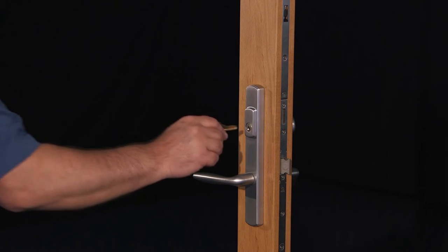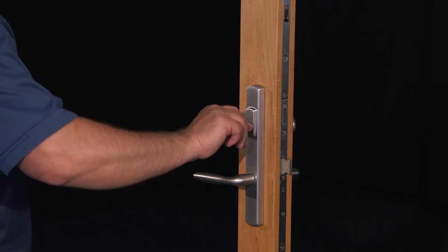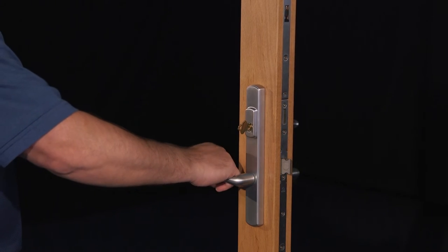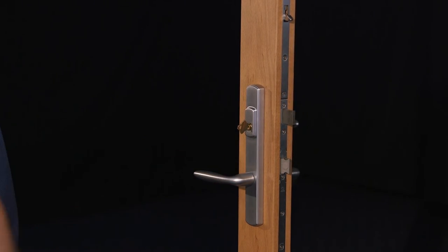Alternately, with the door closed, you can insert the key, rotate the top of the key towards the edge of the door approximately 180 degrees, and then lift the outside handle to engage all of the locking points.